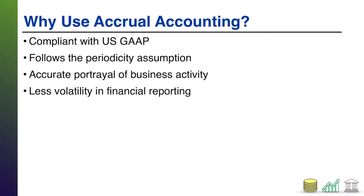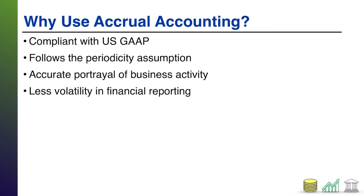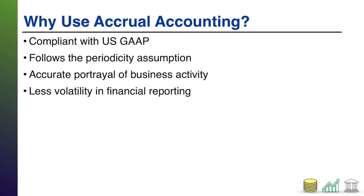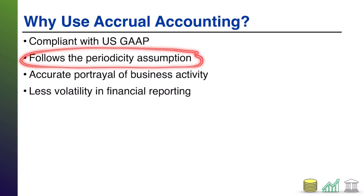Why would you choose to use accrual accounting over the cash basis system? Cash basis is pretty easy to track — cash in, cash out. Well, U.S. GAAP actually requires the use of accrual accounting, and some of the biggest reasons are as follows. First of all, accrual accounting follows the periodicity assumption — we break up our time into artificial periods and can track what economic activity has occurred in that period. It doesn't matter if cash occurs in period one, two, or three; if you economically did something in period one, it gets recorded in period one.